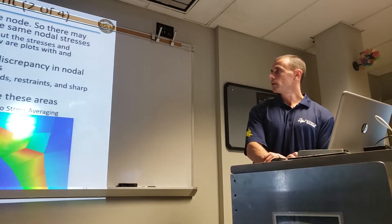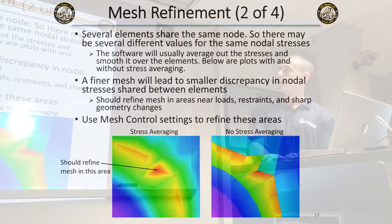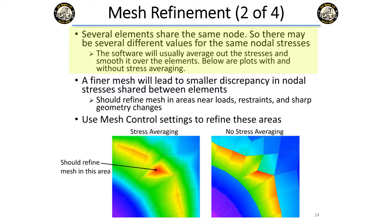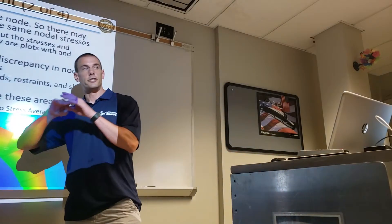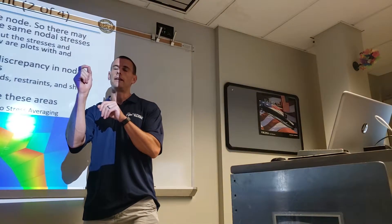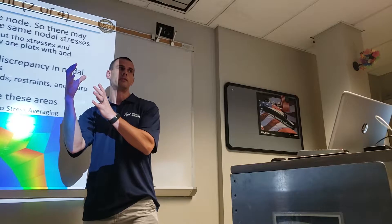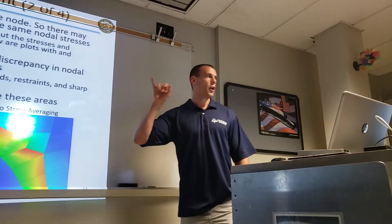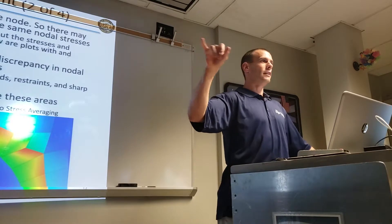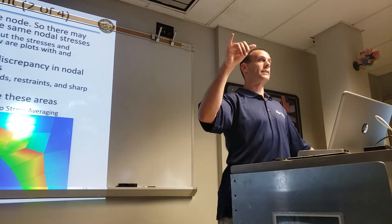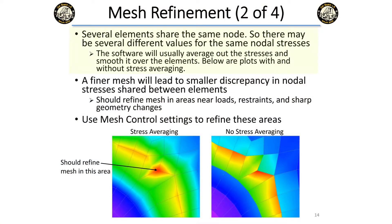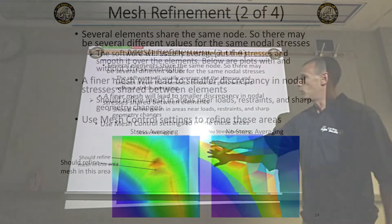Larger meshes can lead to more inaccuracies. Also remember that everything is calculated at the nodes, and elements share nodes. Elements might have different stiffnesses as geometry changes, so there might be a node shared between an element that is not very stiff and another that is stiff. They're essentially arguing over what the stress should be at that node. What the software does is average out the stresses over all the elements touching that node and smooth it over.